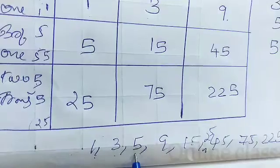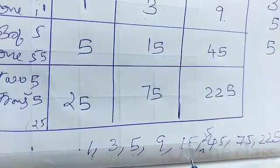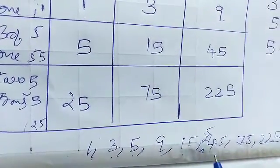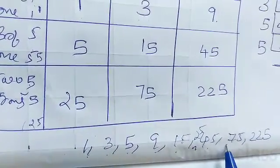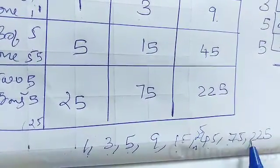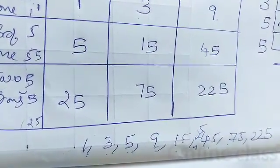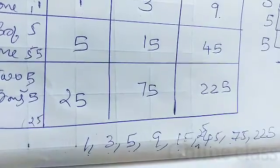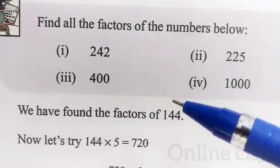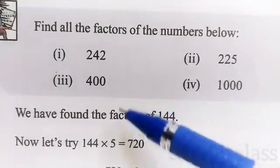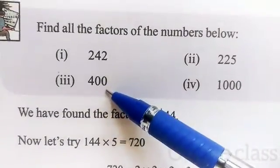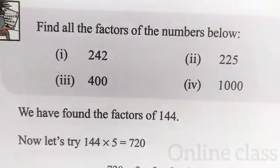1, 3, 5, 9, 15, 25, 45, 75, 225. If you want to write these factors: 1, 3, 5, 9 — we are going to read this. We both divide them.